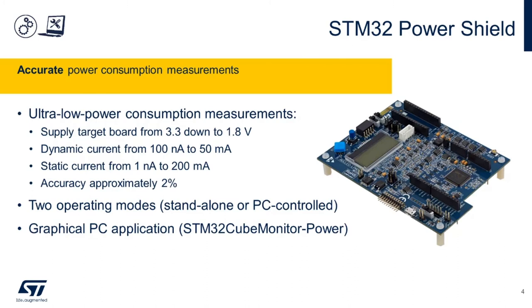As you can see, you can supply the target board from 3.3 volts down to 1.8 volts, and the dynamic current consumption that you can measure is from 100 nanoamps all the way to 50 milliamps. At the same time, as static current measurements, the range is from 1 nanoamps all the way to 200 milliamps, and the accuracy of this board is approximately 2%. In this case, we're also going to use it in standalone mode, which is going to allow us to visualize the current consumption measurements directly on the LCD display available on the top of the board.